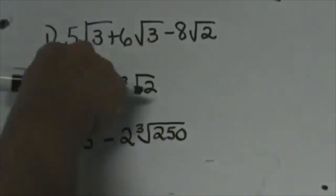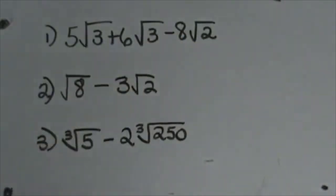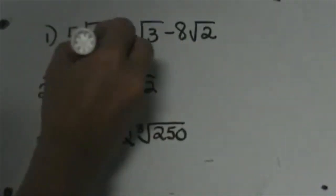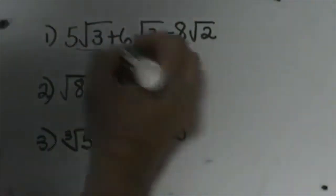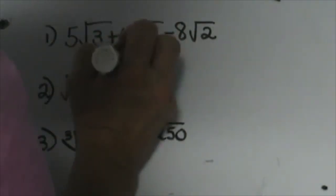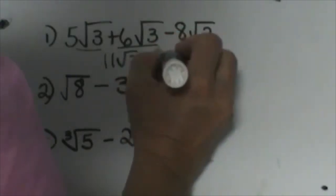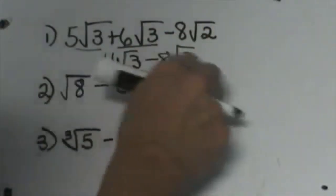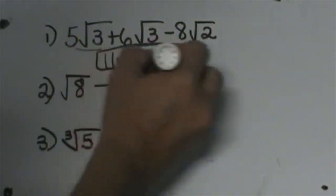If you see this problem: 5√3 + 6√3 - 8√2, you're going to add together the two like terms, which are the 5√3 and 6√3. That's simply 11√3. Now we can't subtract the 8√2 because it is a different radical and √2 has a different value than √3. So we just bring that down, and that would be our solution.